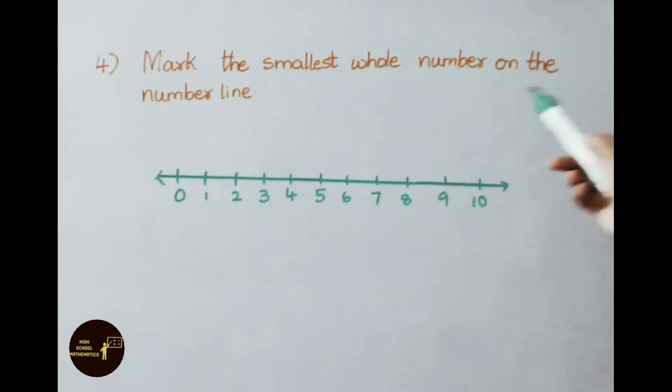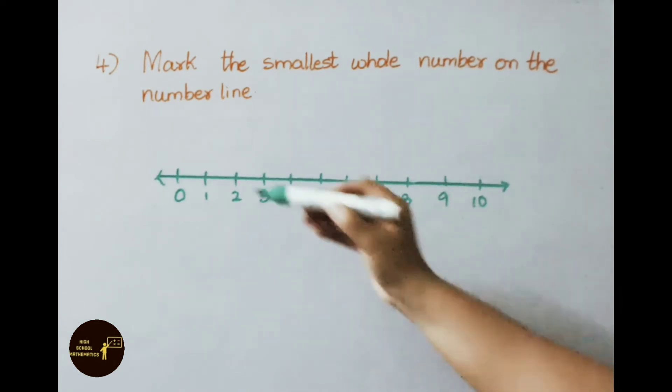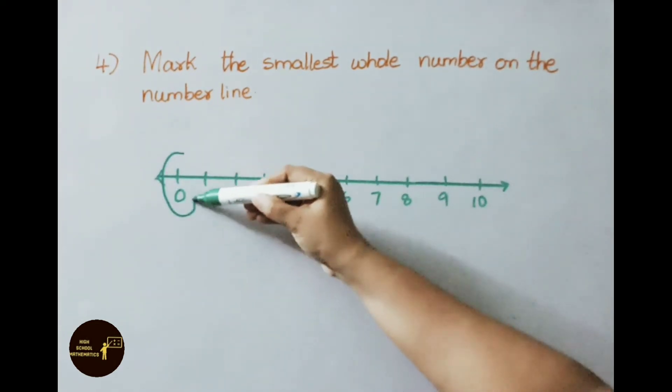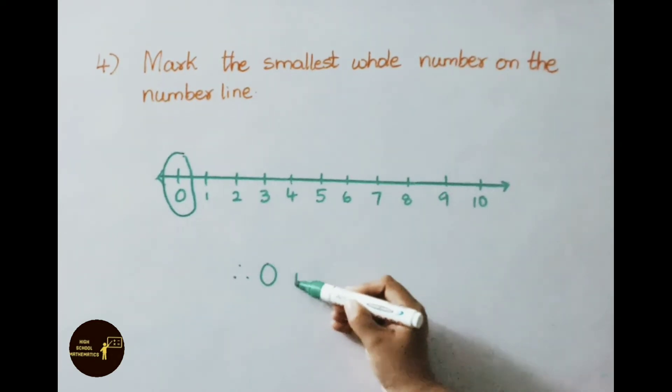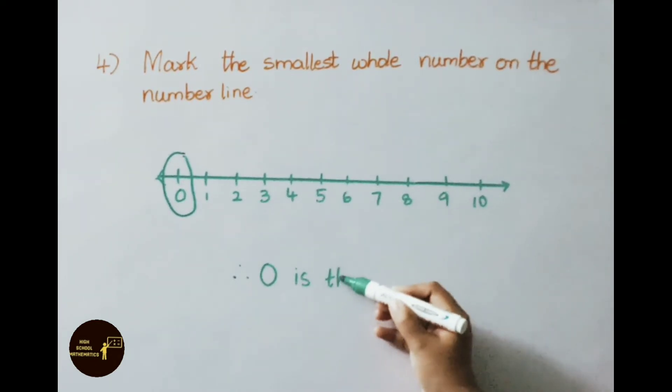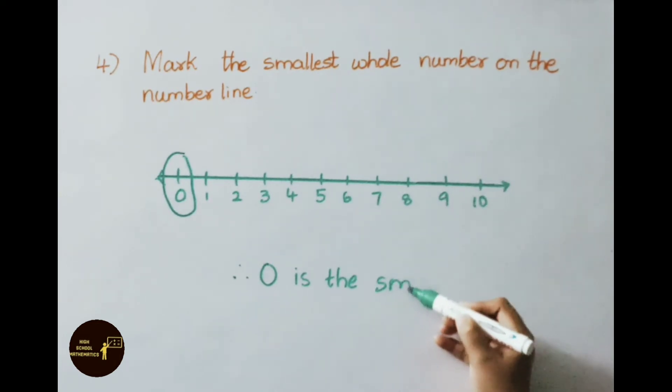Mark the smallest whole number on the number line. On the number line, observe which is the smallest one: 0. So we are going to mark 0 on the number line. Therefore, 0 is the smallest whole number on the number line.